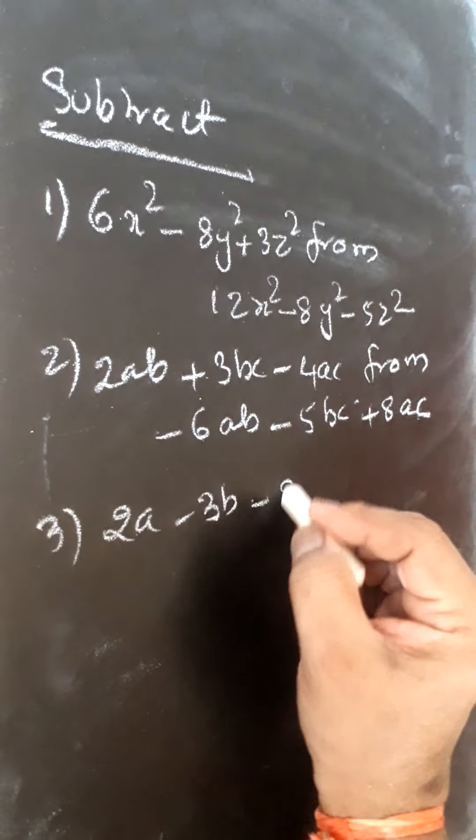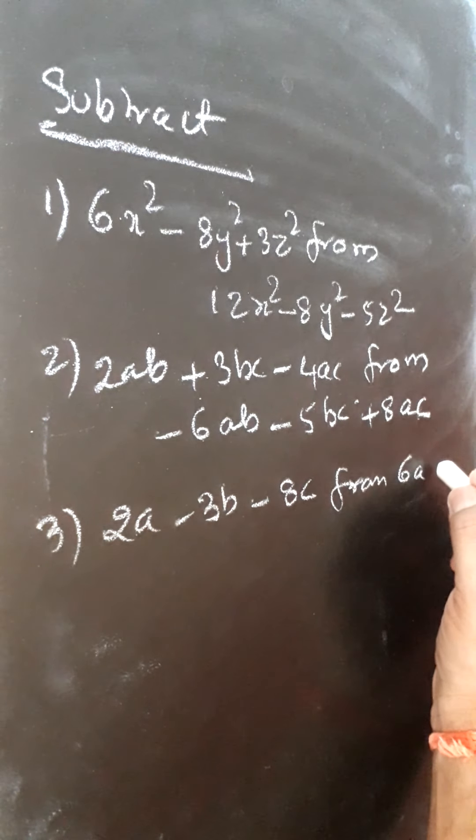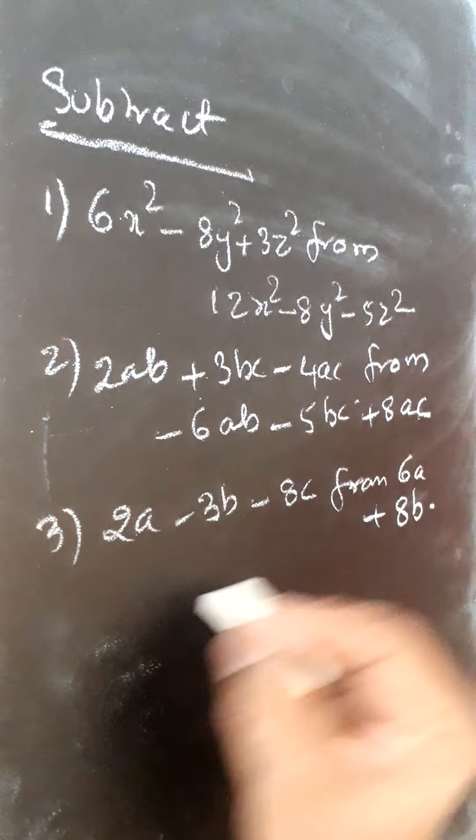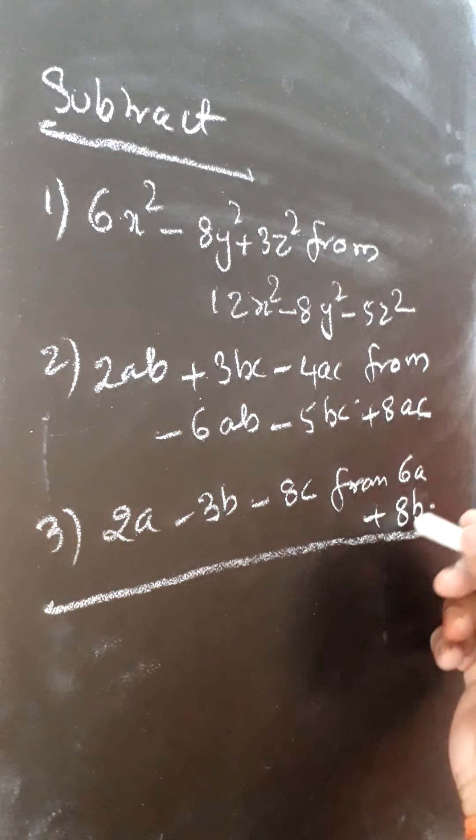And third: 2a - 3b - 8c from 6a + 8b. I have given only two terms in this expression.